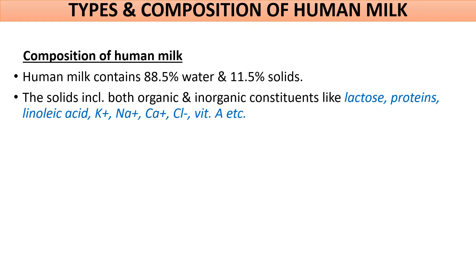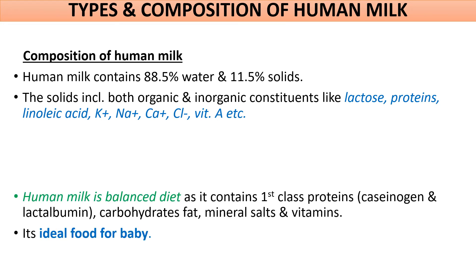Human milk is made up of 88% water and 11.5% solids like lactose, proteins, potassium, sodium, calcium, and vitamin A. Human milk is a balanced diet for the baby because it contains first-class proteins namely caseinogen and lactalbumin, carbohydrates, fats, minerals, and vitamins.